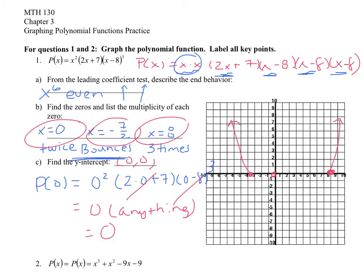The graph goes down, passes through negative 3.5, comes up to zero and bounces, then passes through eight. It's kind of a W-shaped graph when you're done.